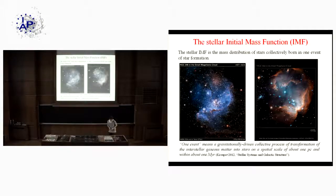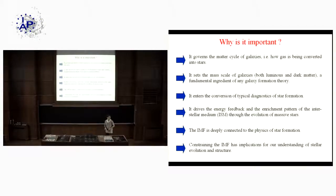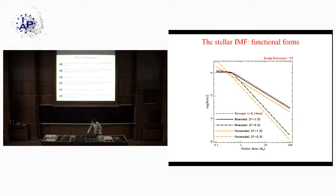Let's start from a very basic definition. The stellar IMF is the mass distribution of stars collectively born in one single event of star formation. This is a fundamental and very important ingredient of astrophysics for a number of reasons. It governs the matter cycle of galaxies — how gas is being transformed into stars. It sets the mass scale of galaxies through the stellar mass-to-light ratio. It enters the conversion of typical diagnostics of star formation, drives the energy feedback into the stellar medium, and of course is important by itself for any theory of star formation.